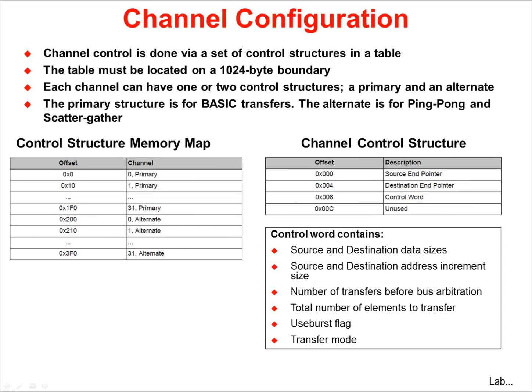Channel configuration for the microDMA is accomplished through a set of control structures placed in a table. This table must be located on a 1K byte boundary. Each channel can have one or two control structures, a primary and an alternate. The primary structure is for basic and auto transfers. The alternate is for ping-pong and scatter-gather transfers.